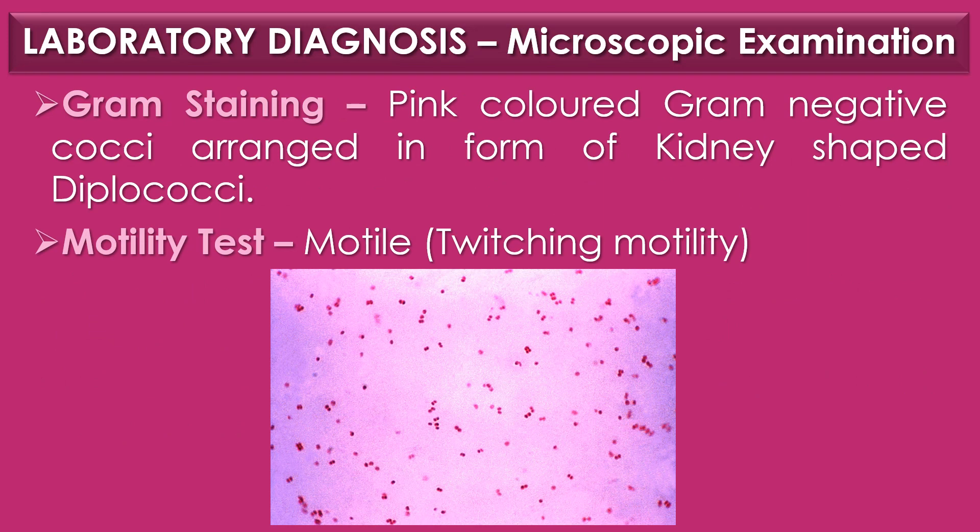Lab diagnosis of Neisseria gonorrhoeae or gonococci: The first diagnostic method is microscopic examination. Under Gram staining, Neisseria gonorrhoeae appears as pink-colored gram-negative cocci arranged in the form of kidney-shaped diplococci. In the motility test, the gonococci are motile in nature and show twitching motility.